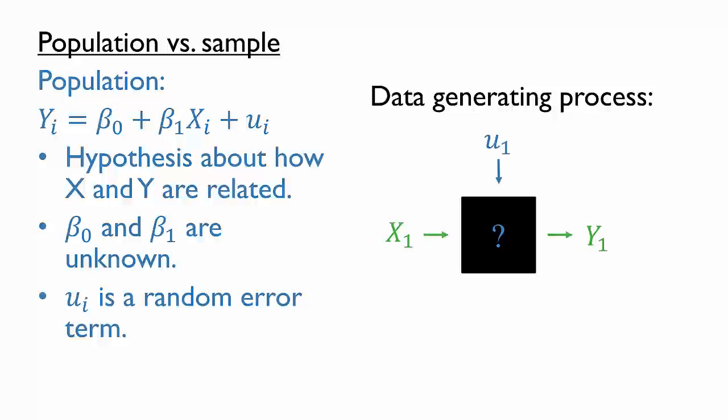Note the color coding of this diagram. We observe the data, x and y, which are shown in green, but we do not observe the data generating process, or at least the parameters of that process, nor do we observe the random error u. These are shown in blue.